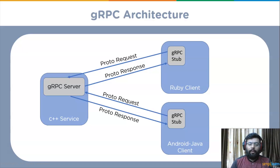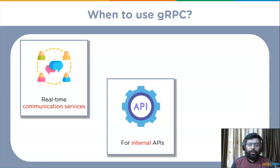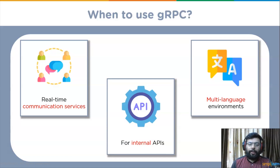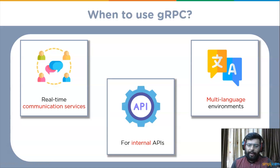Next, we will learn when to use gRPC. gRPC is used in real-time communication services where you deal with streaming calls, and when efficient communication is a goal. It is used in multi-language environments, in internal APIs where you don't have to force technology choices on clients, and in new builds as part of transforming existing RPC APIs.